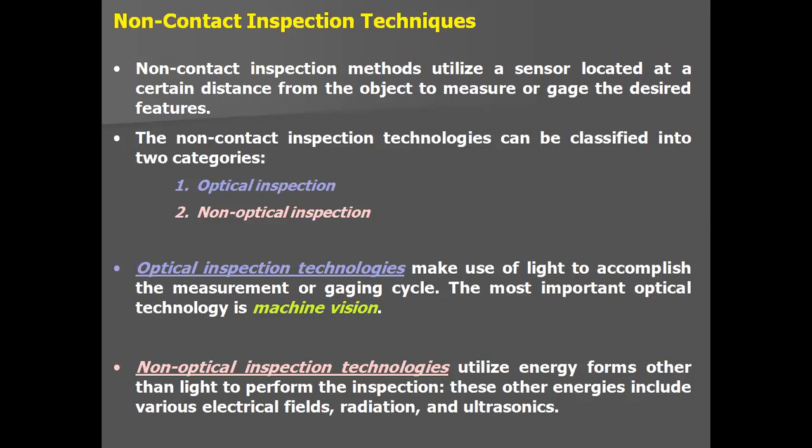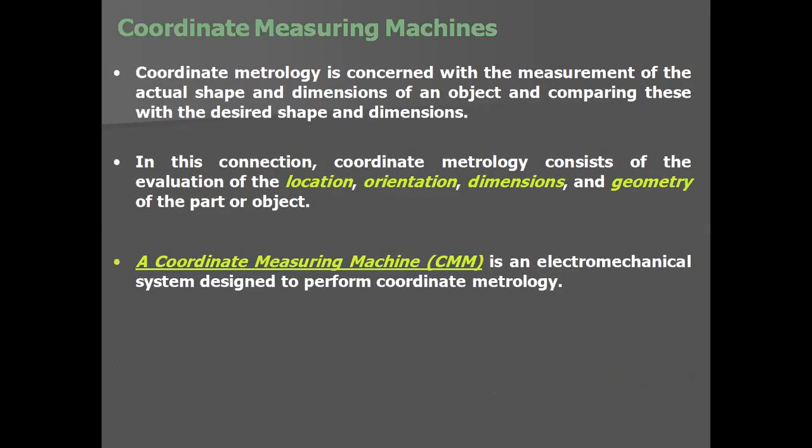The most important optical technology is machine vision. Non-optical inspection utilizes other energy forms such as electrical fields, radiation, and ultrasound. Ultrasonic testing, for example, sends sound waves to check for cracks — if there are voids or gaps in the material, there is a change in the sound, revealing an impurity or gap at a certain point. These are non-destructive types of testing. If light is used, it falls under optical; the most important application is machine vision.